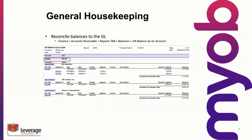The next step would be to reconcile the balances to the general ledger from the subsidiary module, and clearly this is an important step. In the reports tab of all the modules, there is a report — in this case it's 'accounts receivable balanced by account.' This is just the standard report, and I've highlighted the section where it refers to the account in the general ledger that the transactions beneath it relate to.